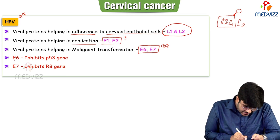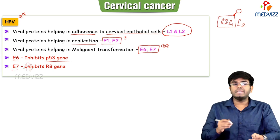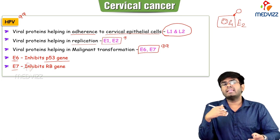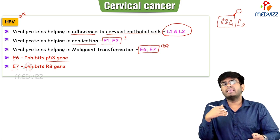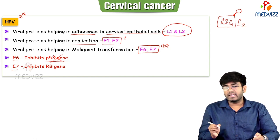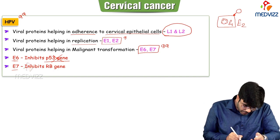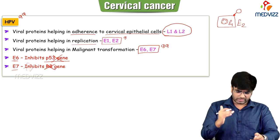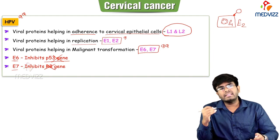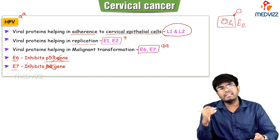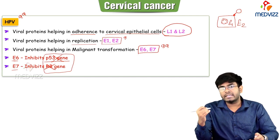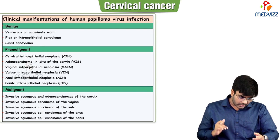When p53 gene is inhibited in the cervical epithelial cells, the cells will be converted into neoplastic cells. The retinoblastoma gene (RB gene) is also an anti-cancer gene. If you inhibit both the RB gene and p53 gene, these cervical epithelial cells will be converted into cancer because of abnormal division.